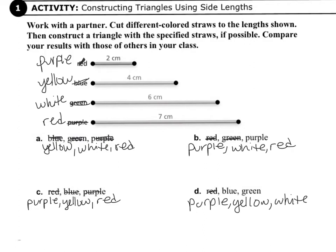Take a moment to cross out the colors that are next to the lengths shown in the book and put the colors that I have shown. So where it says red, you're going to write purple. Where it says blue, you're going to write yellow. Where it says green, you're going to write white. And where it says purple, you're going to write red.